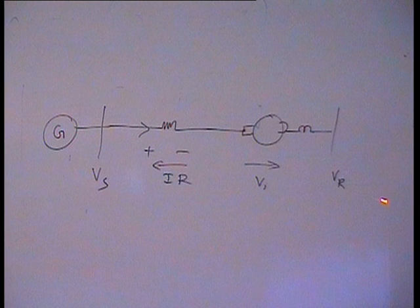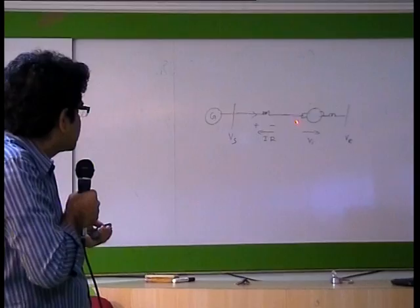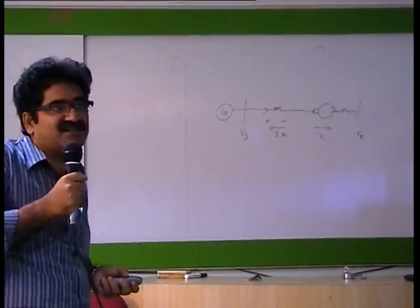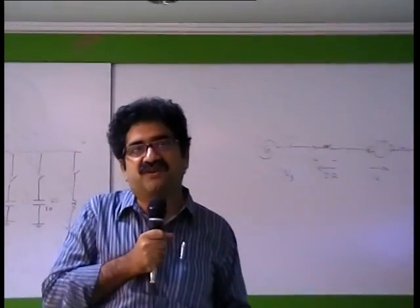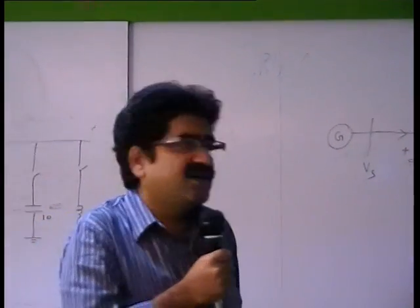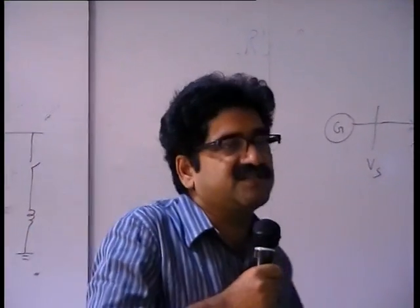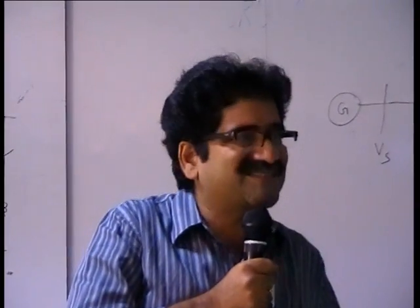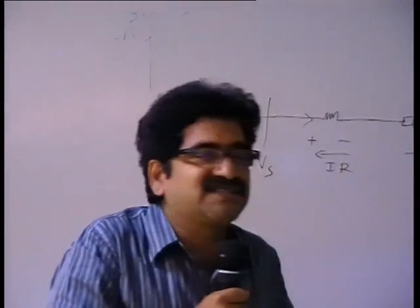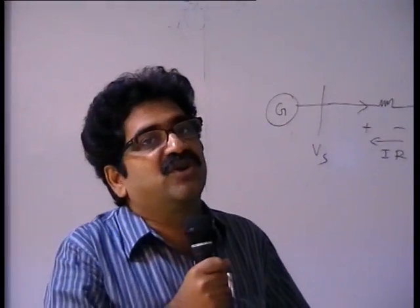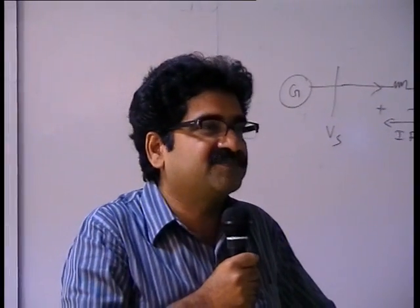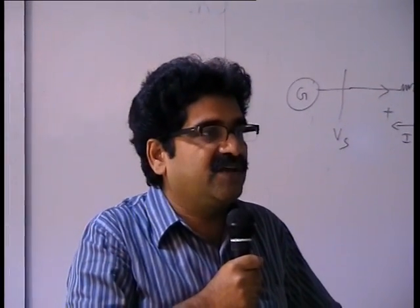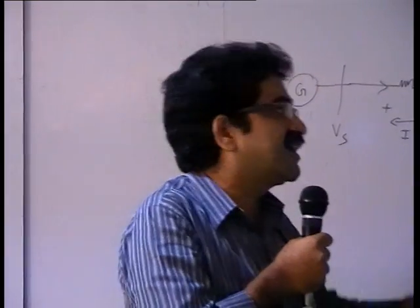When AC transmission lines came, they replaced the DC series generator with the induction regulator. But the induction regulator is a rotating machine — any rotating machine has about 80% efficiency, meaning 20% losses, and the initial cost is very high. So we are going for the solid-state equivalent of the induction regulator. The solid-state equivalent of the induction regulator is the DVR.